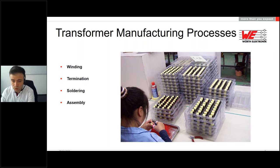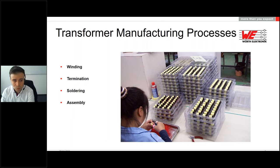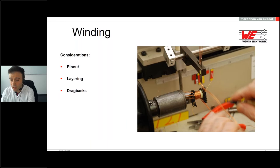Once we know which bobbin we are working with, we have to think about which processes are going to affect the transformer. We have mainly four different processes: winding, termination, soldering, and assembly. Although they can be treated separately, they also affect each other — for example, bad winding can be the root cause of issues during soldering or assembly.